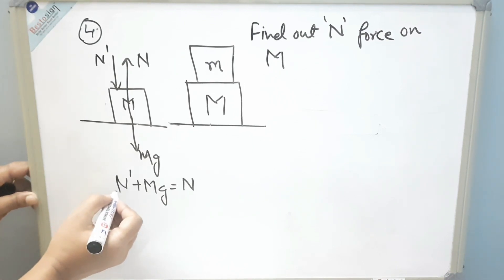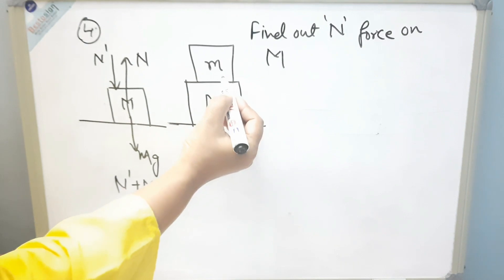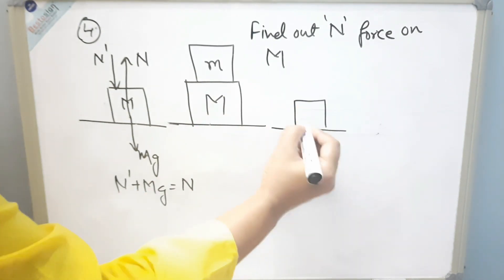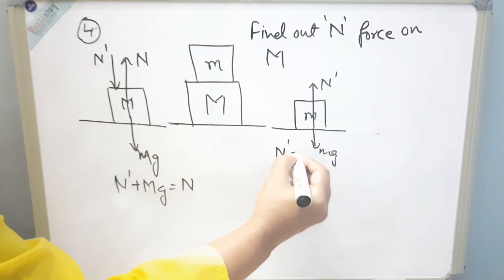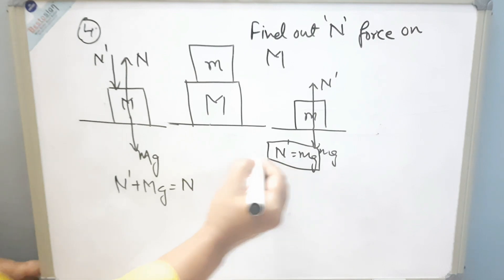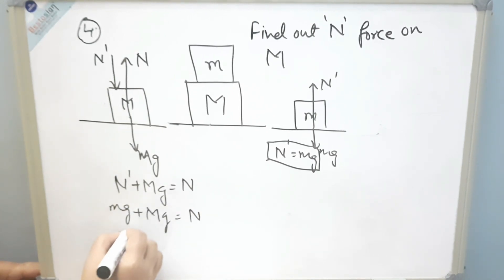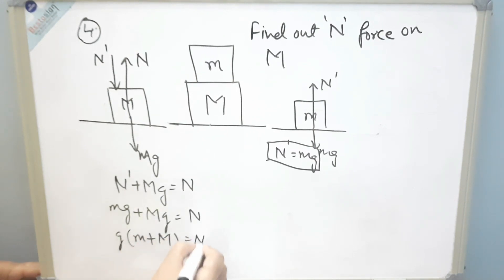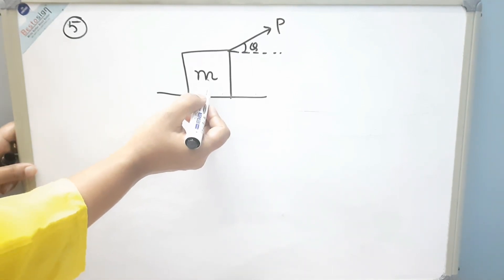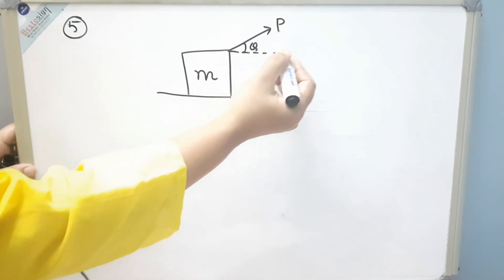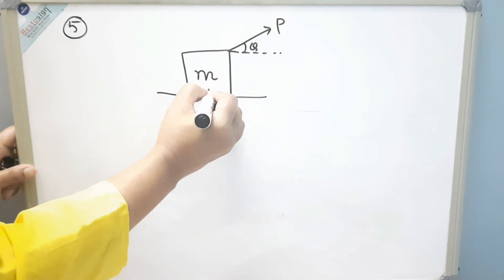There are two unknown quantities, N and N dash, so we need another equation. Drawing the free body diagram of small m: mg acts downward and N dash acts upward, so N dash equals mg. Substituting back into the equation for capital M: N dash plus Mg equals N, so N equals Mg plus mg.